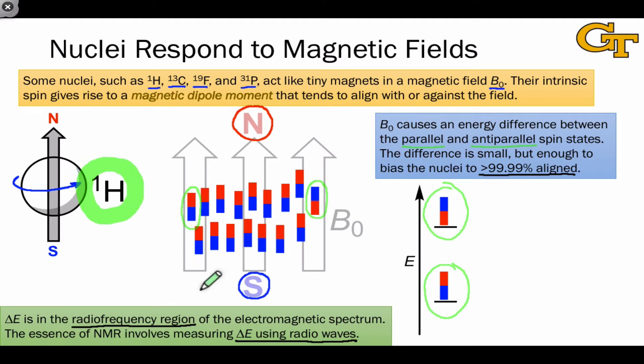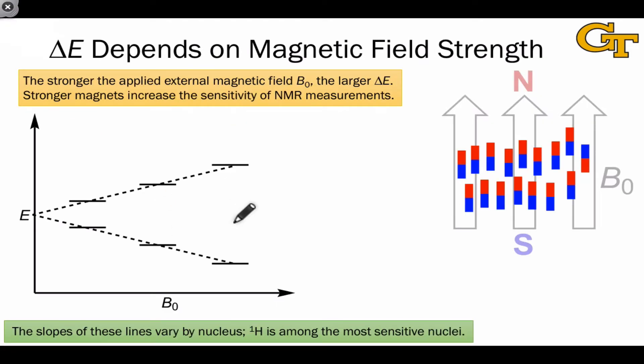And delta E, as it turns out, is affected by the electronic environment of the nucleus because electrons themselves have magnetic moments as well. And so the essence of NMR really, for our purposes, involves measuring this delta E value for different types of nuclei using radio waves. The most important nucleus for this purpose is, without question, the proton, the hydrogen-1 nucleus, which is ubiquitous in organic molecules.